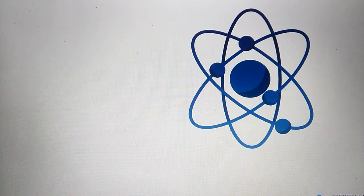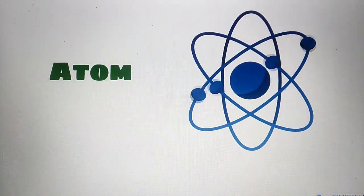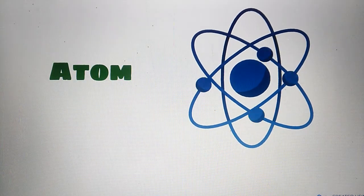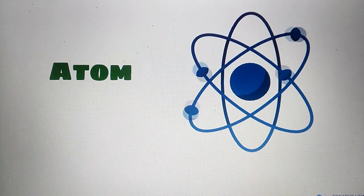This is an atom. When a positive or negative charge comes on an atom, then it is said to be an ion.